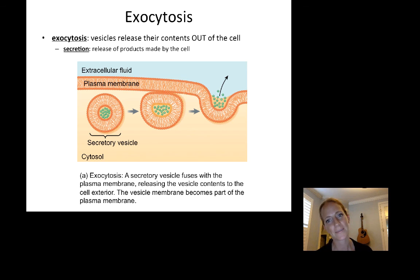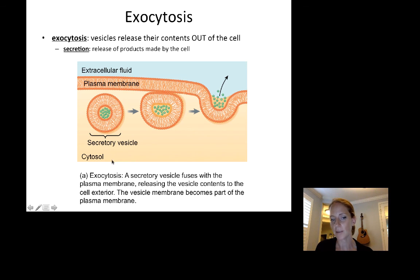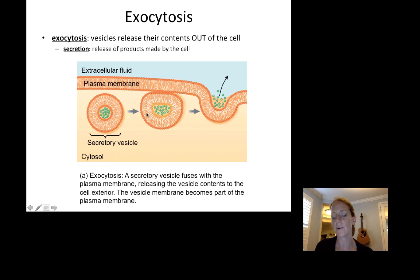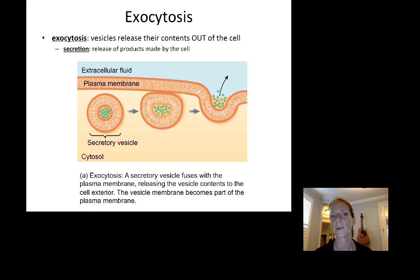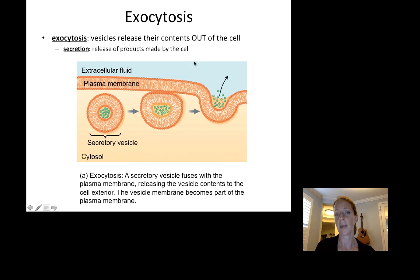The last type is exocytosis — when vesicles release their contents out of the cell. These molecules are made in the endoplasmic reticulum, sorted and packaged in the Golgi, and concentrated in a secretory vesicle. That vesicle then fuses with the plasma membrane to release the contents out of the cell — this could be enzymes, mucus, earwax, or other products made by the cell. Exo for exit — things exit the cell.